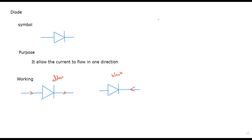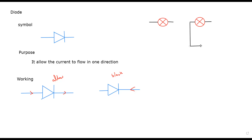For example, if we have an AC supply — alternating current supply — I'm drawing the same circuit twice because it's an AC supply, so I have to show both directions of current flow. With an AC supply, I place a diode at this position.